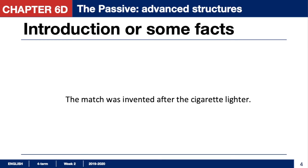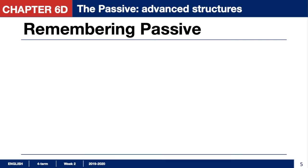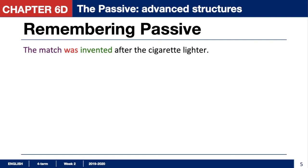Have you known that the match was invented after the cigarette lighter? Once you have learned this fact, let's use this sentence to remember the passive. The match was invented after the cigarette lighter. Who invented it? We don't know — by somebody — and that's not important. In the passive, the subject is not important because we say the action happened but we don't know or don't want to say who did it. What is important is the object — here it's 'match' — and the structure of passive is the auxiliary of the tense plus verb 3. In this situation it is 'was,' past simple, so we can say it's past passive.